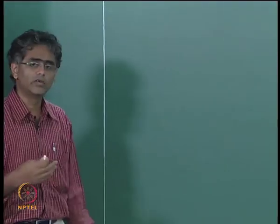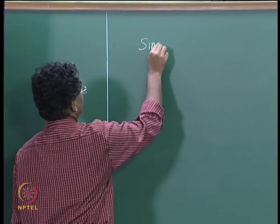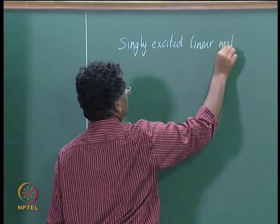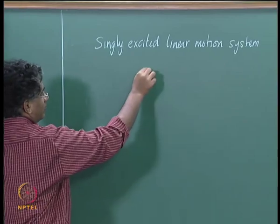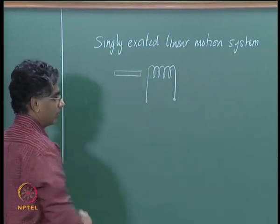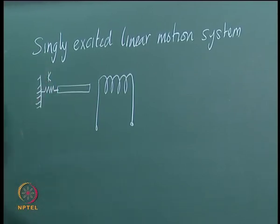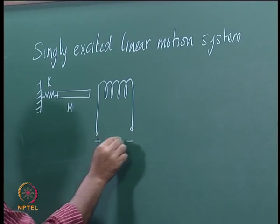We had seen in the earlier lecture how the idea of inductance is used to derive an expression for the force that is exerted. More specifically we saw a singly excited linear motion system which consists of a coil and an iron rod fixed to a substratum connected by a spring having a spring constant K. The iron bar has a mass M and the coil is excited with a voltage V.